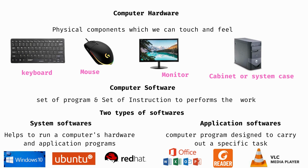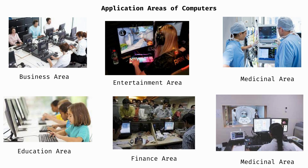System software examples include Windows 10, Ubuntu, and Red Hat. These are operating systems. For application software, examples include MS Office — which covers Word, Excel, and PowerPoint — Adobe Reader or Foxit Reader as PDF readers, and VLC Media Player. You need to install system software first before you can install application software.